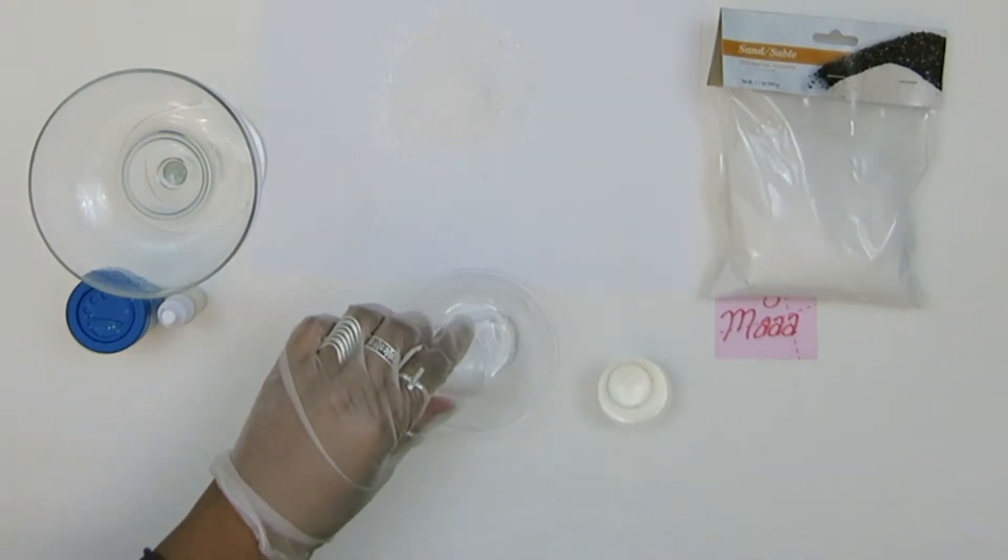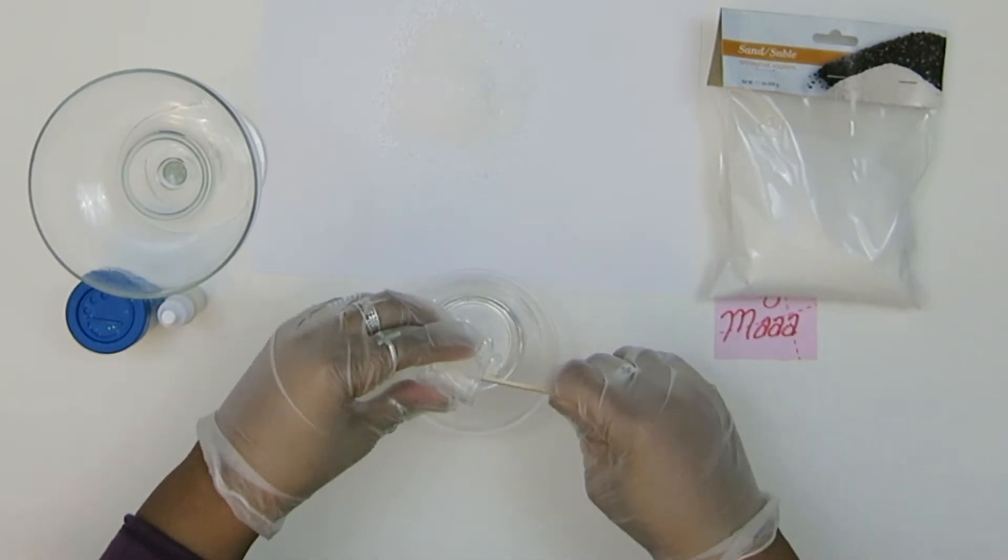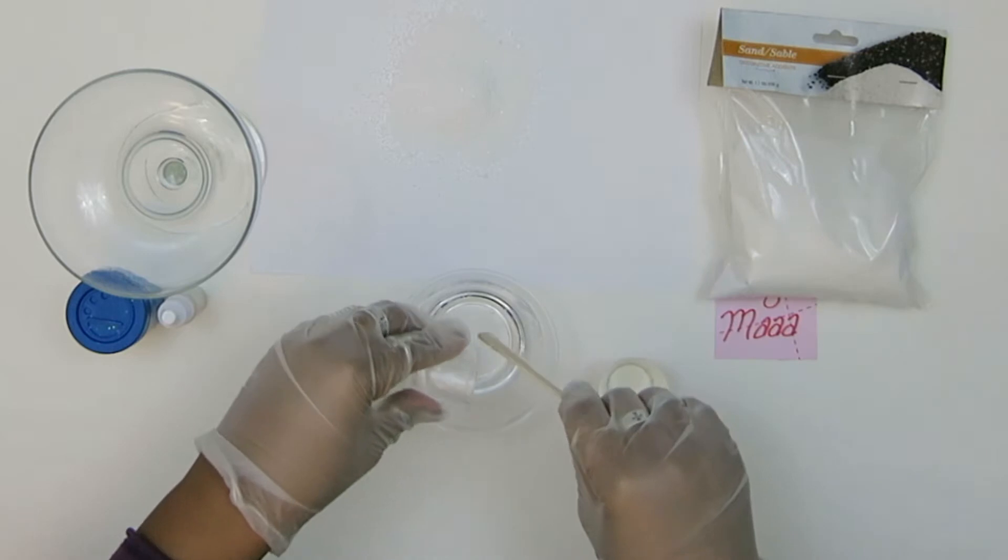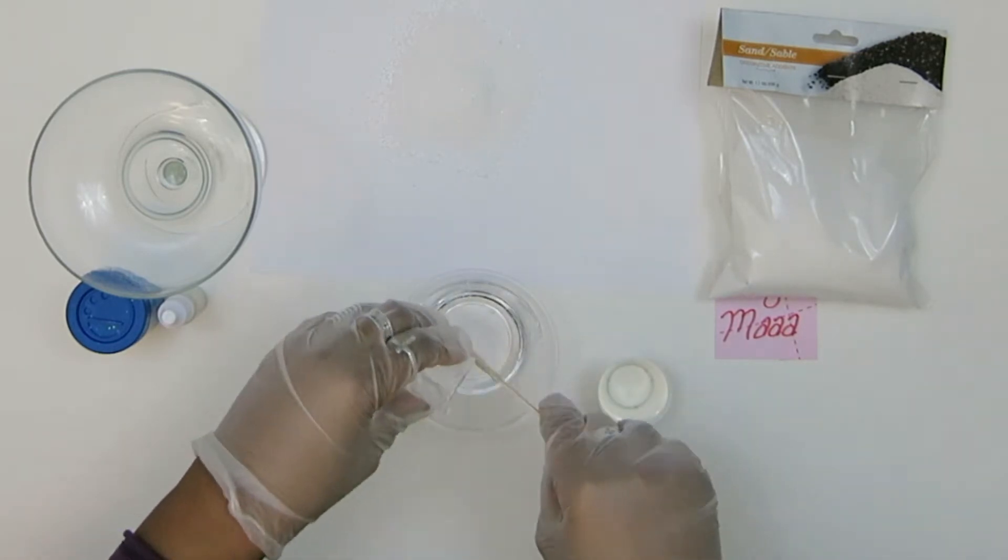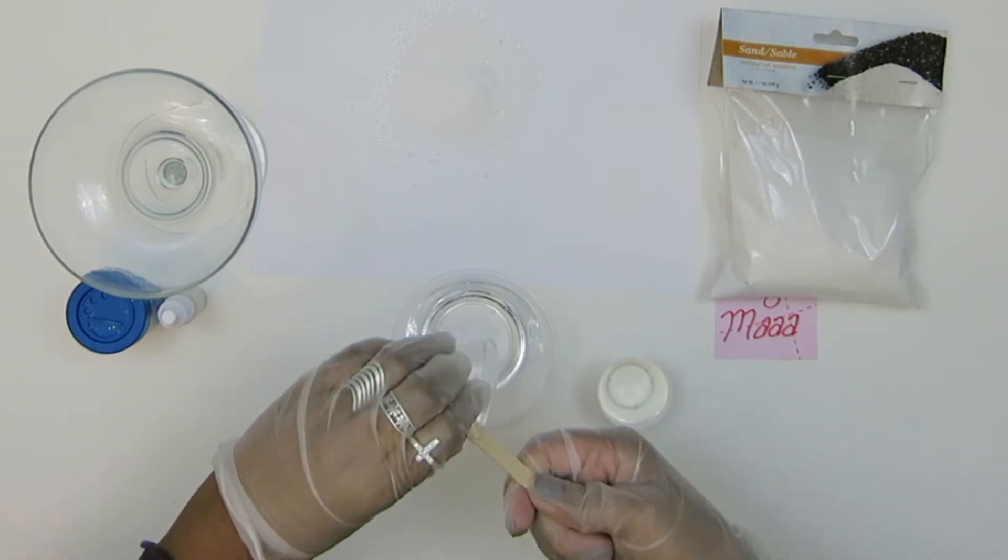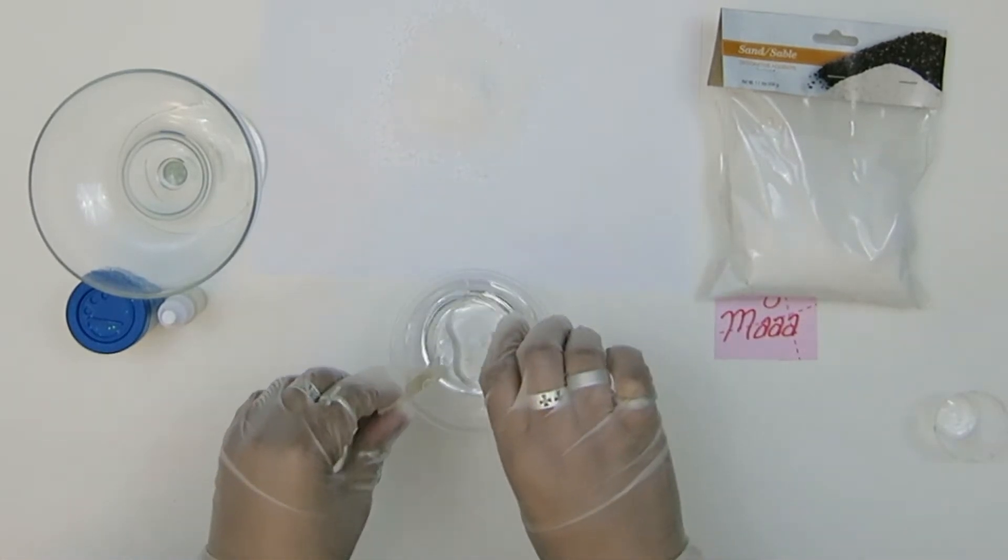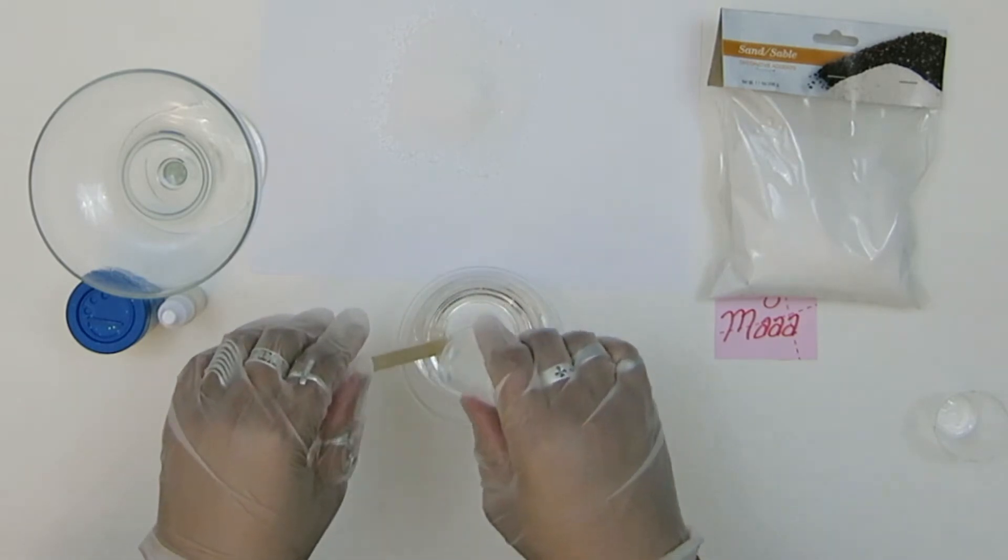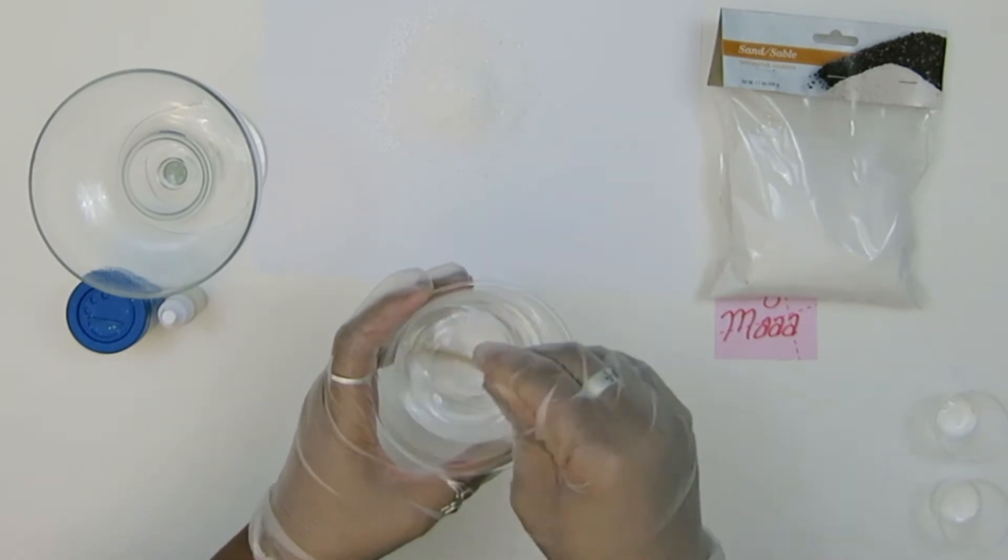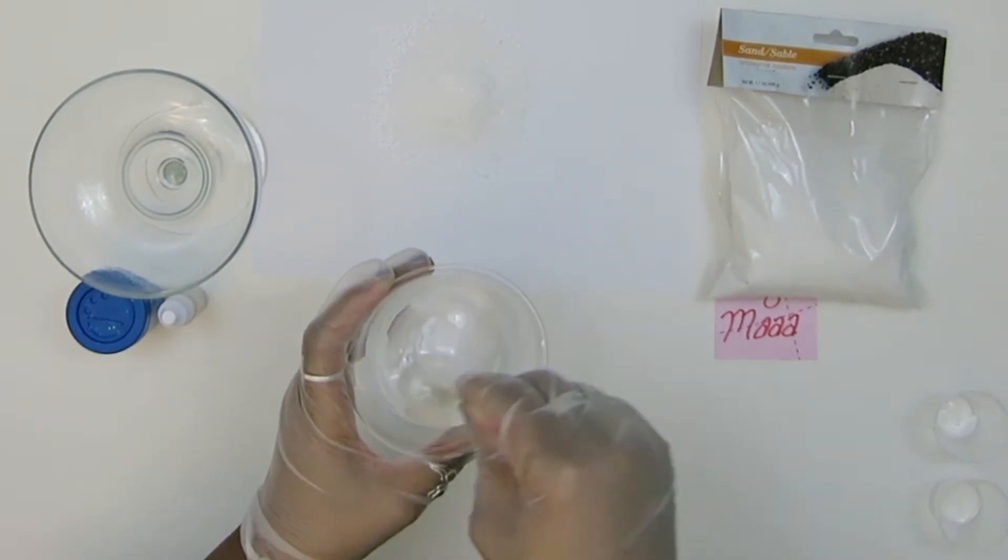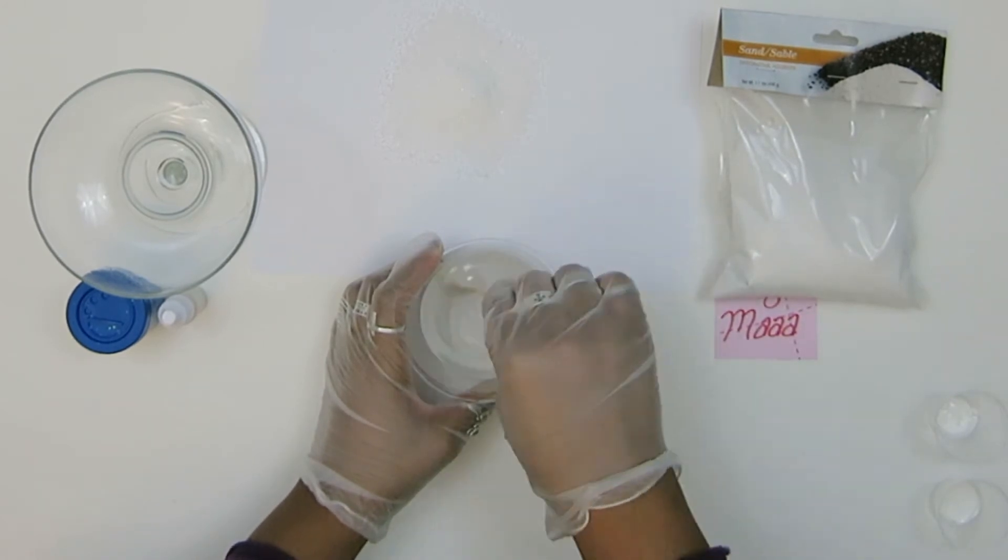Here you see me mixing the hardener for the resin into the actual resin, making sure I get all of that resin out. It's kind of thick but you have to be precise with your measurements. Then I'm going to mix it together really slow so that I don't get too many bubbles and very thoroughly. It's going to look kind of swirly once the swirls go away and it's not kind of opaque anymore. When it clears up again you'll know it's ready.